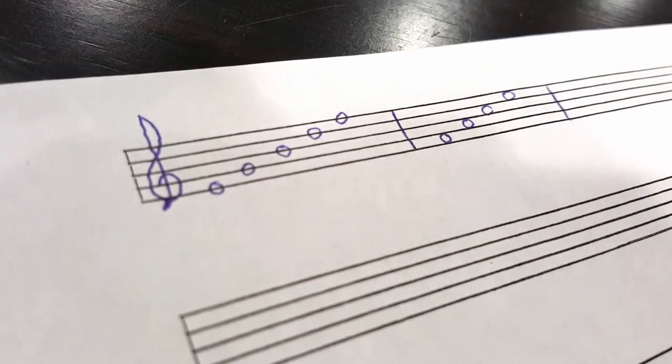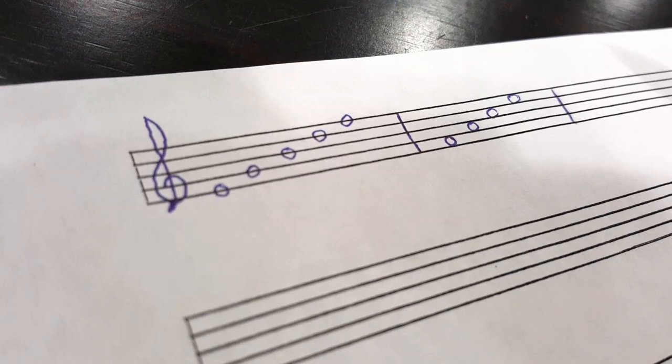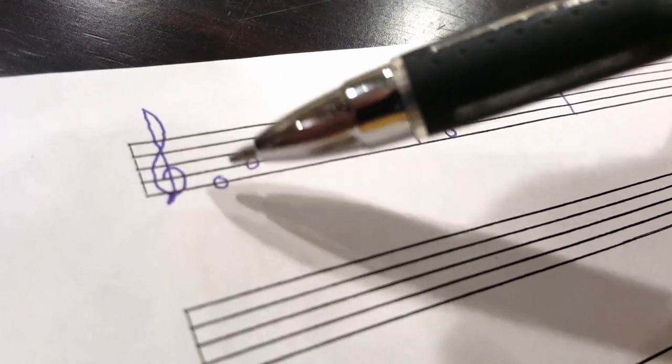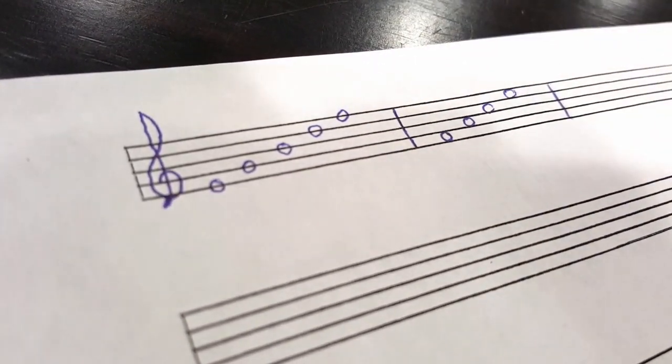A common question: if these are half notes, which way would those stems go? Would they go up or down, and what is the rule?